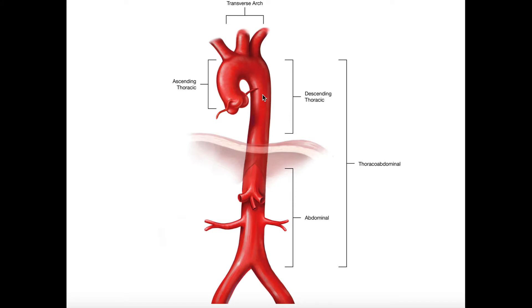As the aorta descends downward, it actually crosses through the middle of the diaphragm — not in front, behind, or to either side. There's a hole in the diaphragm called a hiatus, and the aorta descends directly through that hole. Other structures like the inferior vena cava also go through there. When it exits the diaphragm inferiorly, from then on we refer to it as the abdominal aorta.